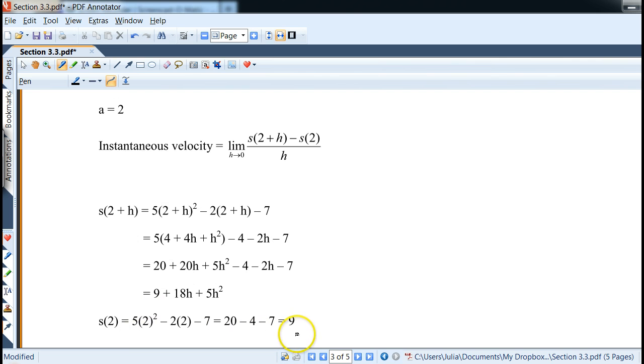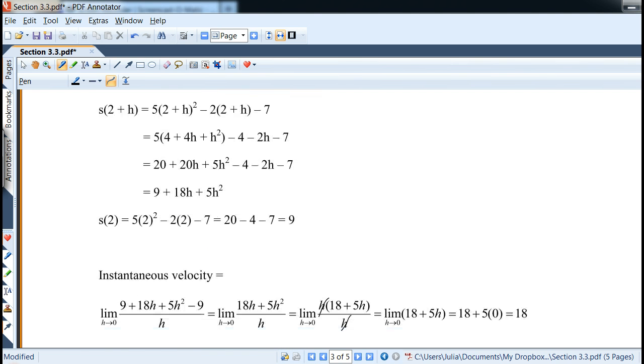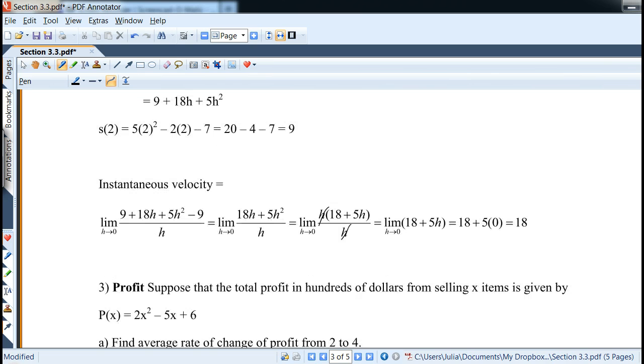S(2), similarly, we get 9. Now instantaneous velocity is the limit as s(2 + h), now notice I plug in the whole thing, minus s(2) over h, so we cancel the constants. So we're left with only the values that have h in it, 18h plus 5h squared. Similarly, we cancel, we factor out the h and cancel, so we end up with 18 plus 5h, which ends up as 18 plus 5 times 0, which is 18. Okay so that's how you would do it.